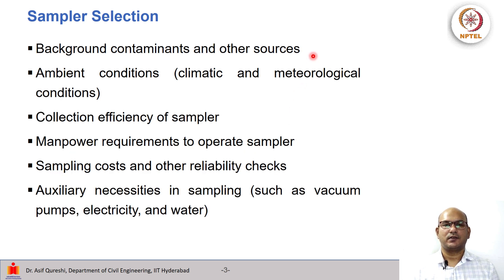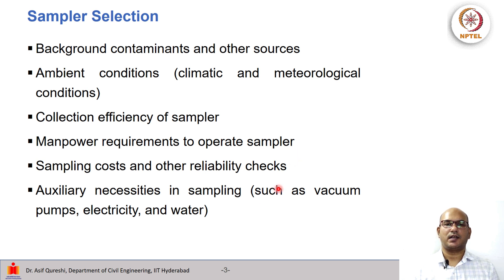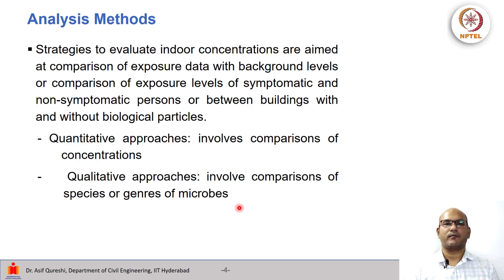We also considered what could be the contaminants and sources, what are the ambient conditions, what are the collection efficiency of the sampler, what are the manpower requirements, what are the sampling costs and other reliability checks, and auxiliary necessities such as vacuum pumps, electricity, and water. Now, once all this sampling is done, we have to go for the analysis methods.